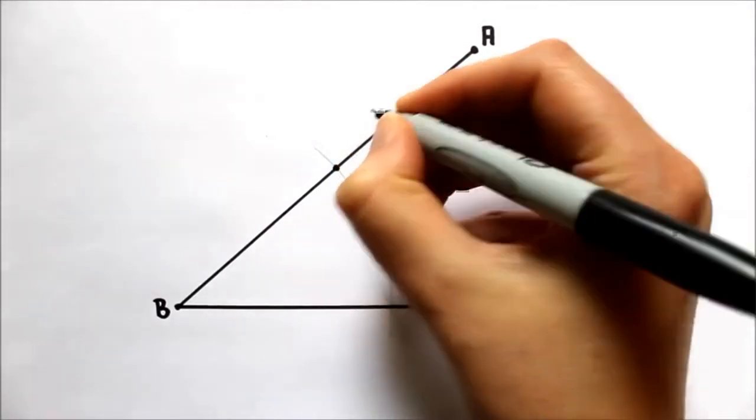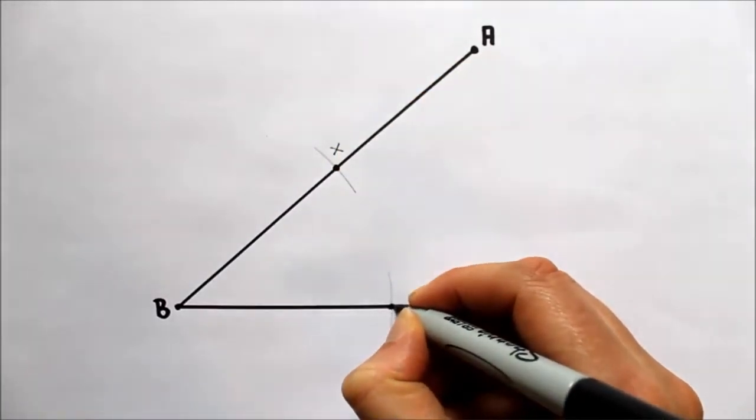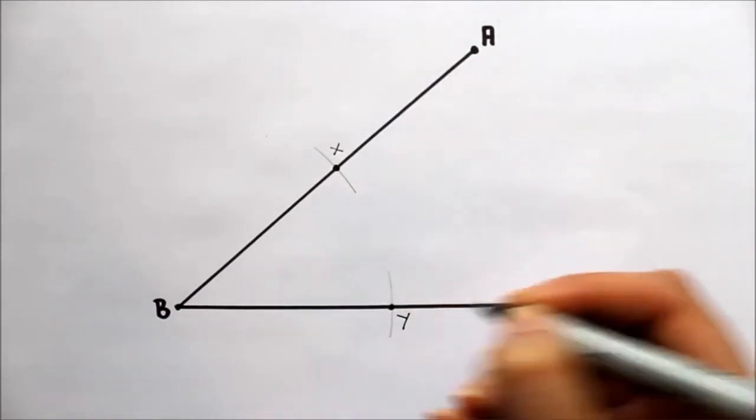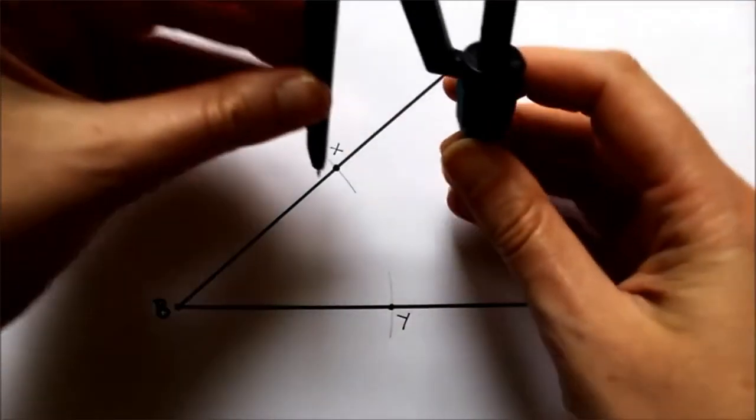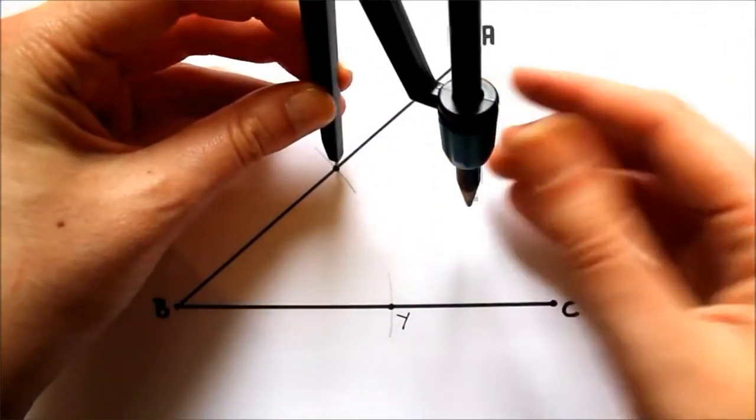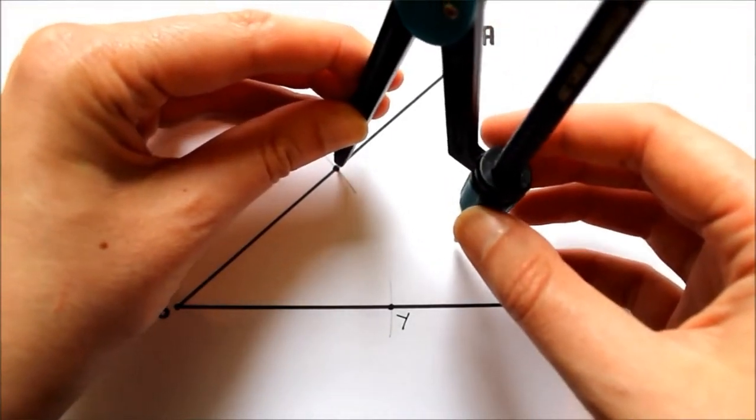So I'm just going to mark in the point X and the point Y. Now I take my compass again and I can use the same distance that I used for BX and BY. I draw another arc.